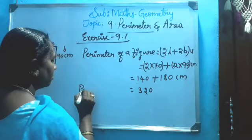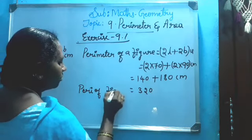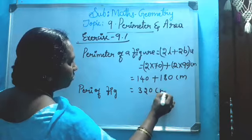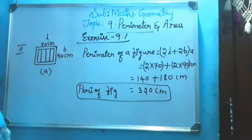Two sevens are 14, plus two nines are 18. Now total them both: 8 plus 4 equals 12, carry 1, so 3 plus 1. Perimeter of figure is equal to 320 centimeters.